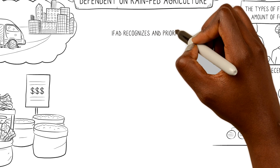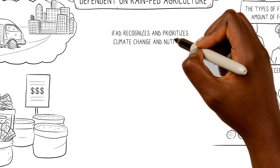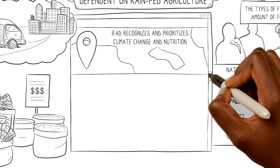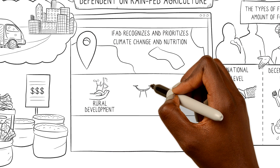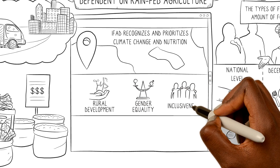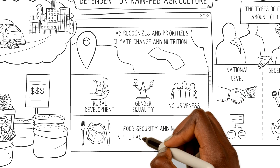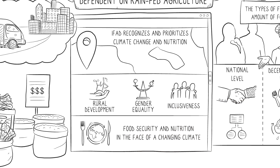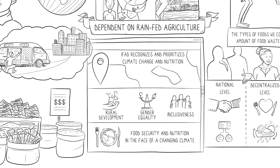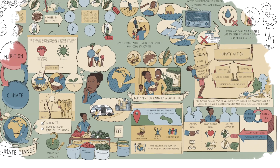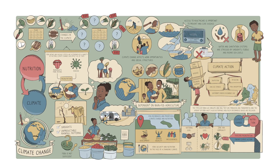IFAD recognizes and prioritizes climate change and nutrition by investing in transforming the lives of the most vulnerable rural communities. IFAD promotes rural development, gender equality, and inclusiveness to end hunger and poverty, food security and nutrition in the face of a changing climate. This was an example from Zimbabwe, but these linkages can be found in other countries where IFAD operates as well. Do you want to know more? Then visit the IFAD website.